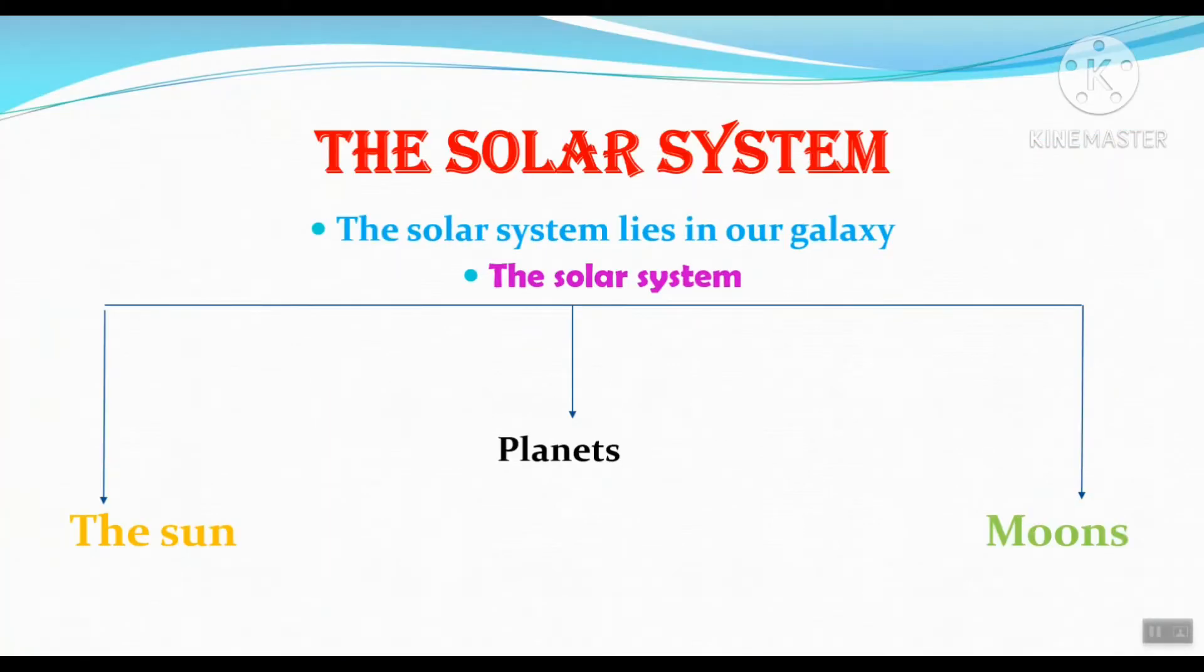In the previous lesson, we said that we live in a very wide universe which consists of galaxies. And every galaxy consists of millions of stars. Our lesson today is about the solar system, which the Earth belongs to.